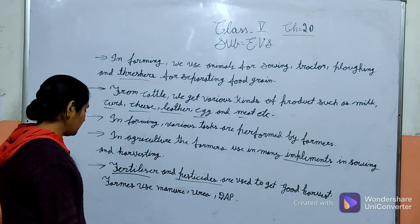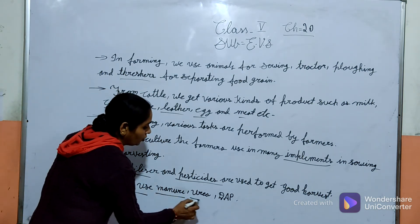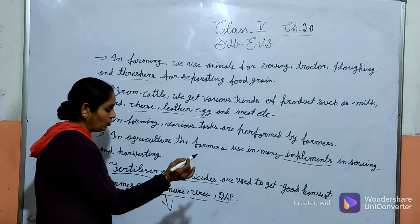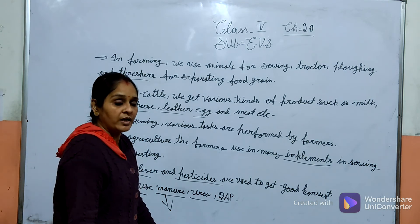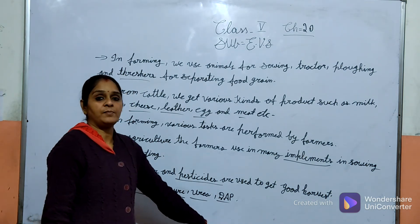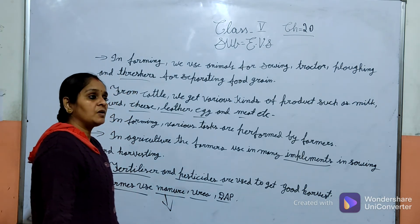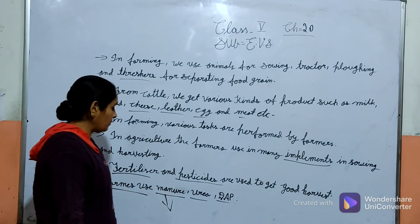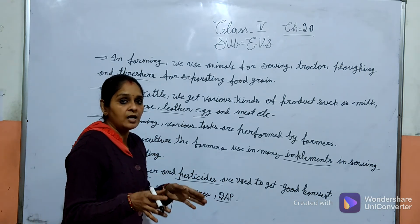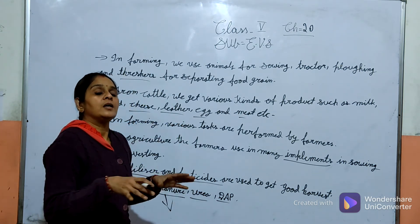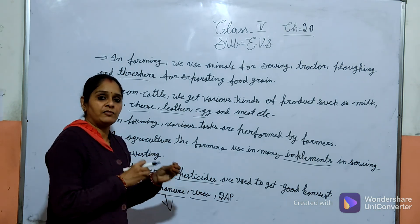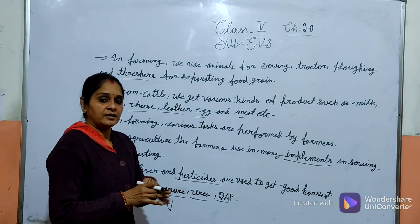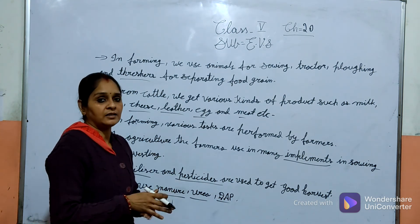Farmers also use manure and fertilizers such as Urea or DAP. Manure is prepared and a big amount is put into the field. Water is also added to the manure over about 3 days.